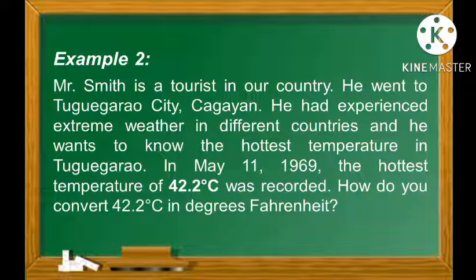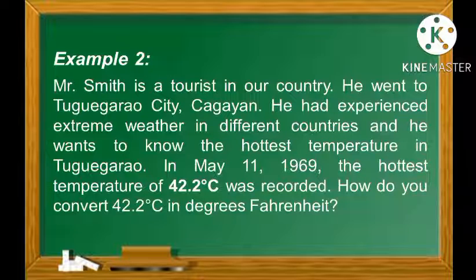Now let's have example 2. Mr. Smith is a tourist in our country. He went to Tuguegarao City, Cagayan. He experienced extreme weather in different countries and he wants to know the hottest temperature in Tuguegarao. On May 11, 1969, the hottest temperature of 42.2 degrees Celsius was recorded. How do you convert it?